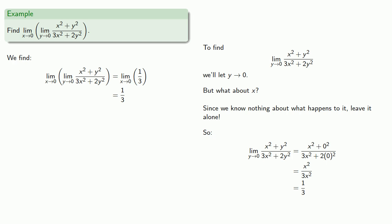So we want to find this limit. Well x will leave as x and y will let go to zero. And simplify. And so this limit as y goes to zero is one third.